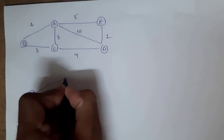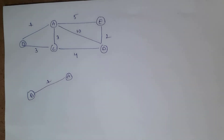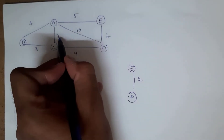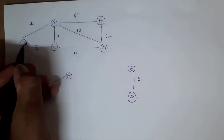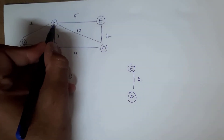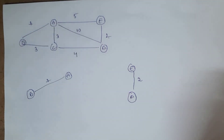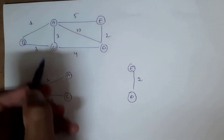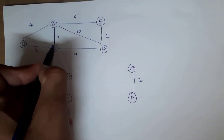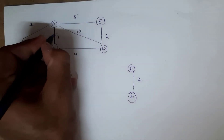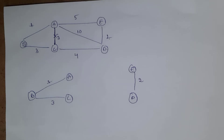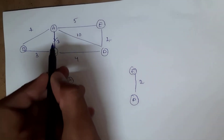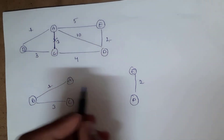Kruskal's method always says: select the smallest weighted edge. Among all edges, weight 1 is smallest, so first I select edge B to A with weight 1. After 1, weight 2 is next smallest, so I select that. After 2, weight 3 is next — B to C has weight 3 and A to C has weight 3, so I can select either; I will select one of them.